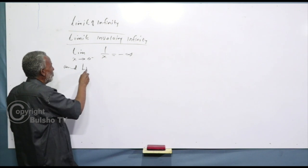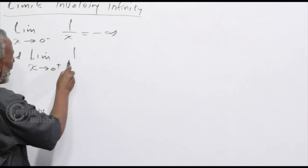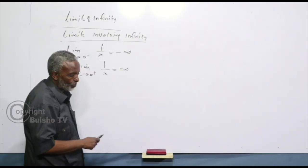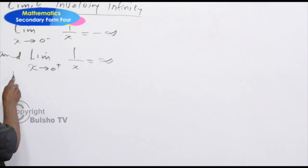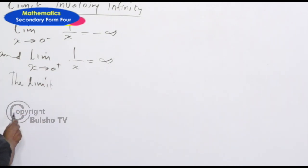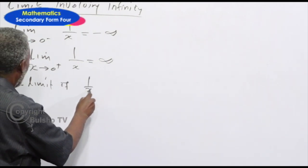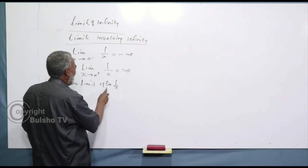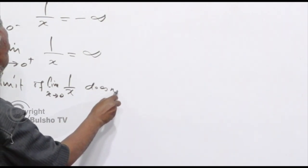Lim, x is equal to 0, of positive 1 over x — we have minus infinity. The limit of one of... I guess the limit as x approaches 0 does not exist.